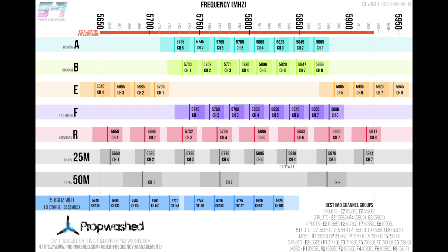For example, if you've got a friend who likes to fly on race band channel two and you're flying in the 50 megabits mode on DJI, definitely don't be flying channel one — you might be fine flying channel three. Although if you're flying with other analog pilots, you're probably better off sticking with 25 megabits per second mode. That's really the main reason why I made an update to this frequency chart — to put those DJI 50 megabits per second channels on there.